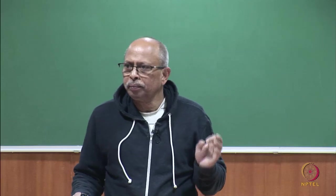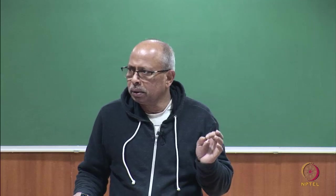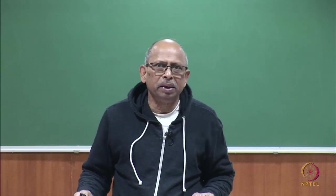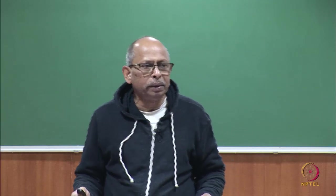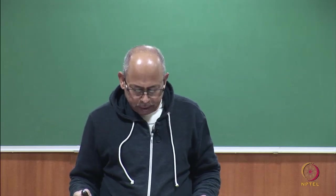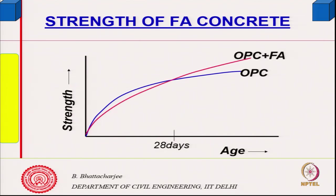We are looking at strength of concrete when you design with supplementary cementitious materials like fly ash concrete. We were looking at this in the last class — if the strength of OPC is at a certain level and we design for similar 28-day strength, this would be true for GGBFS, fly ash, ground granulated blast furnace slag, metakaolin, and burnt clay pozzolanas — they would all show better long-term strength.